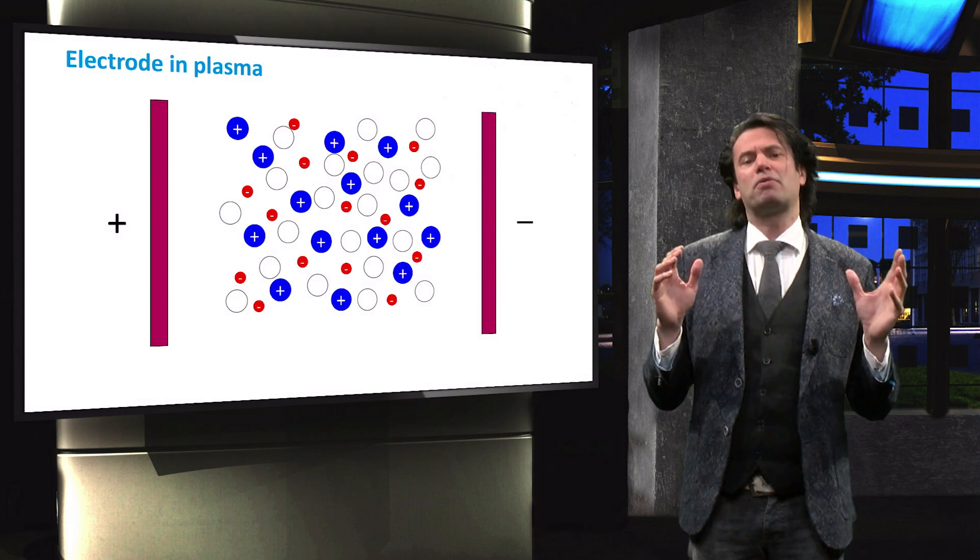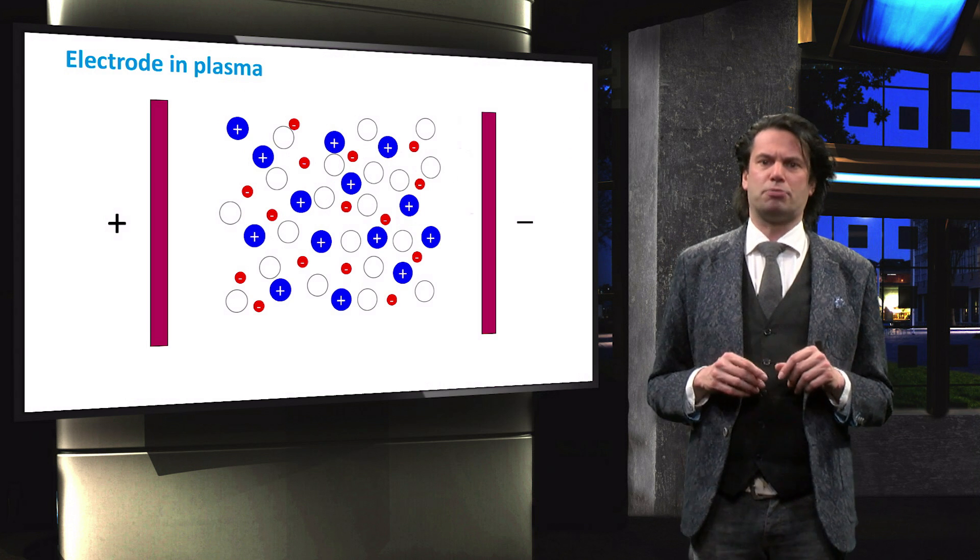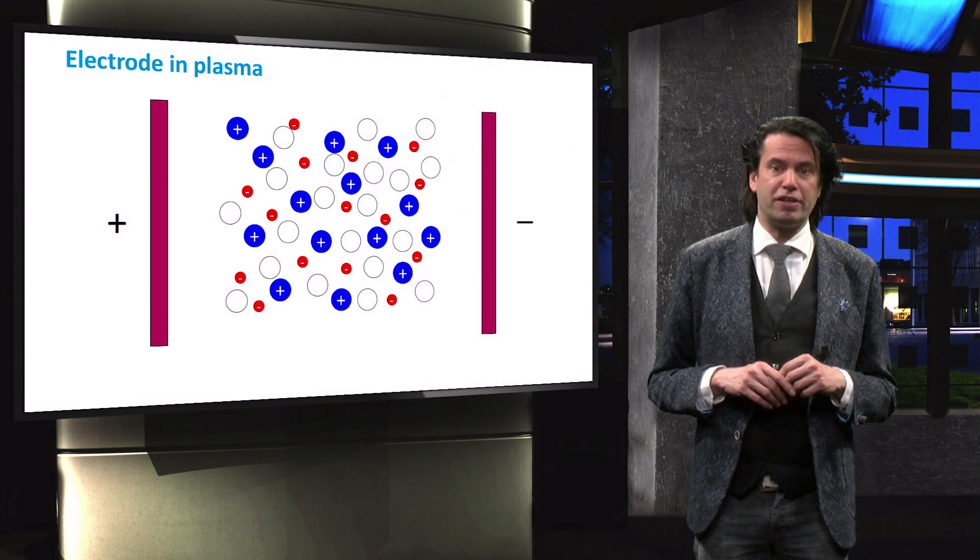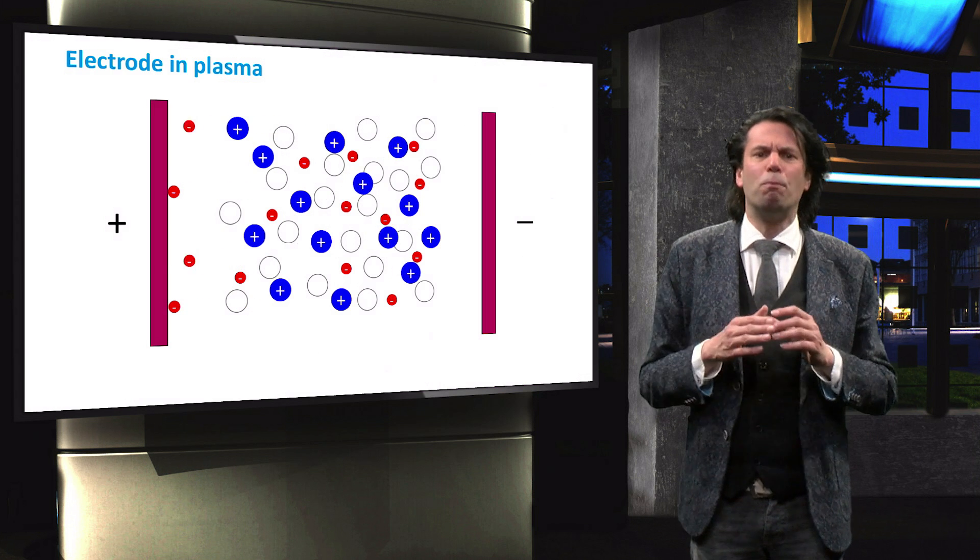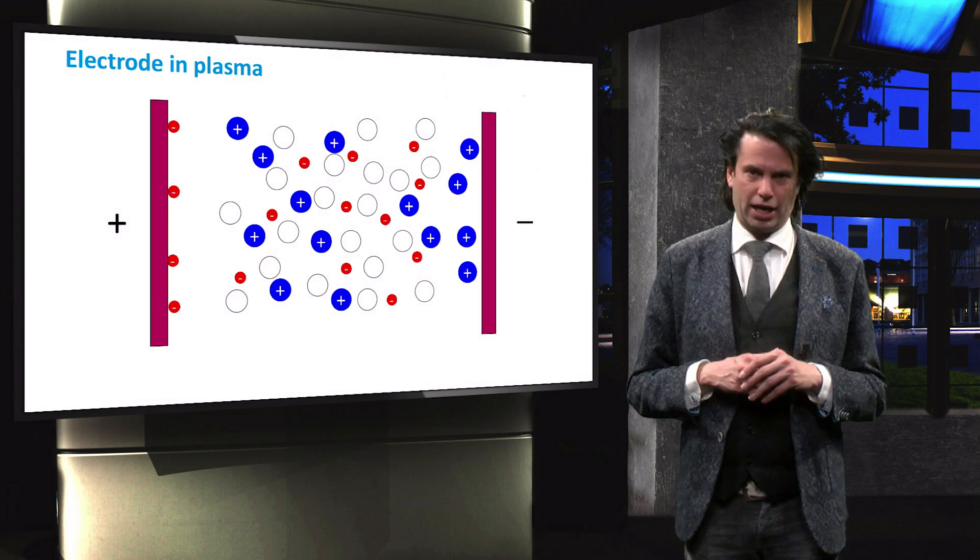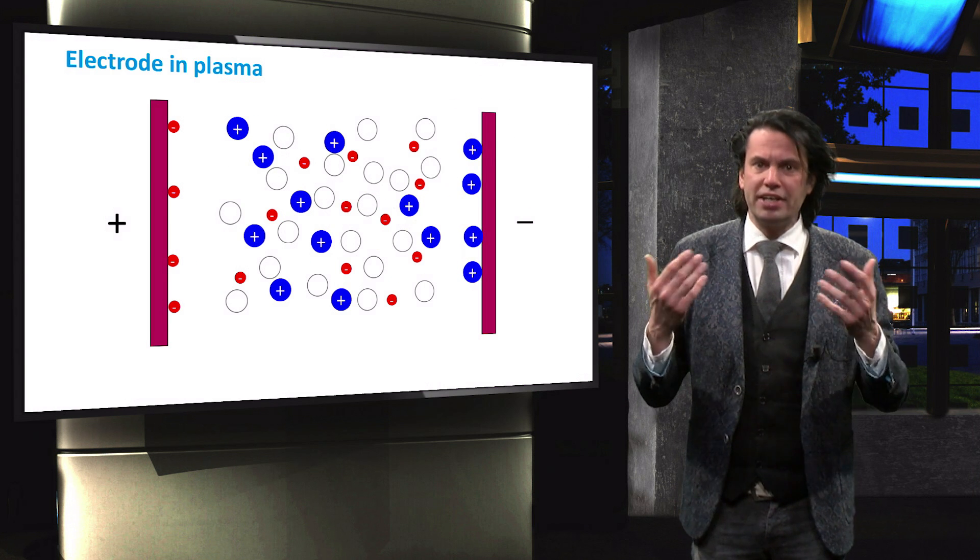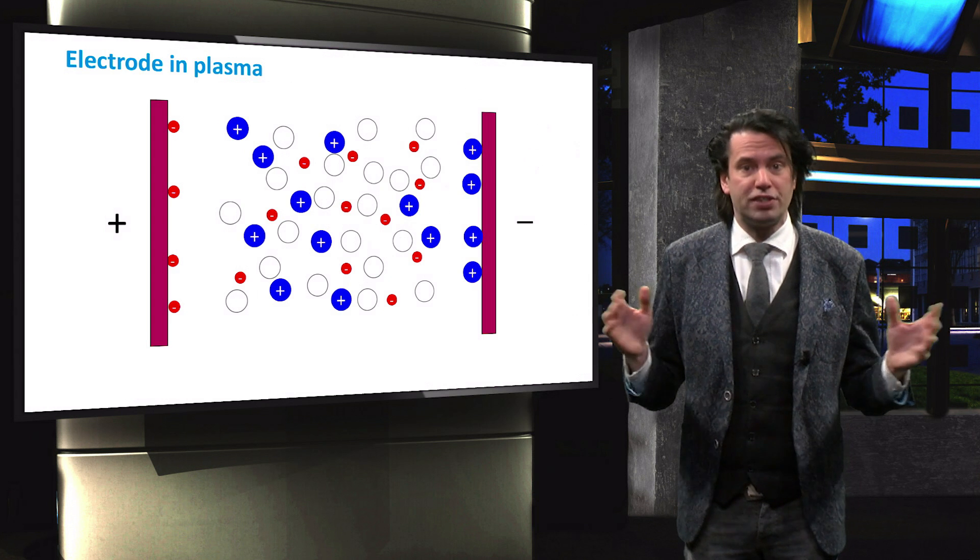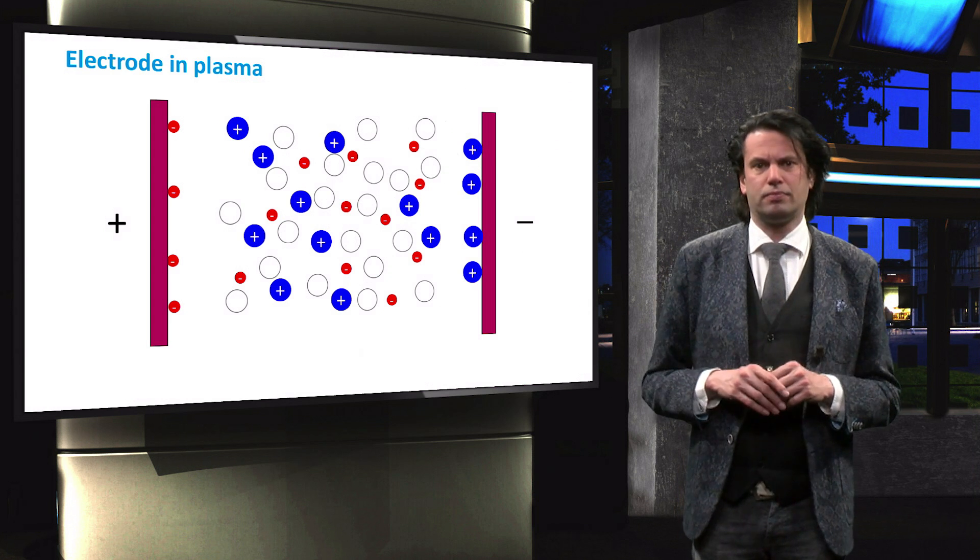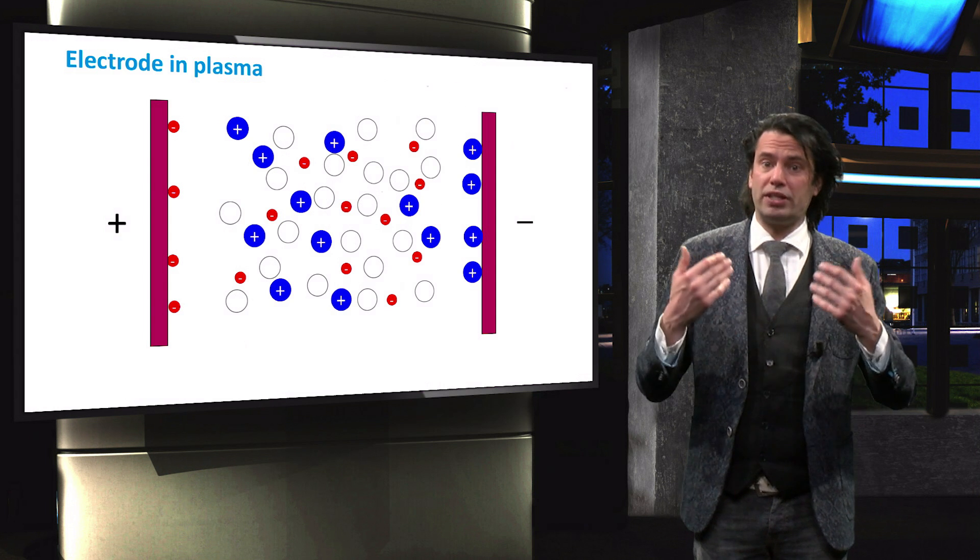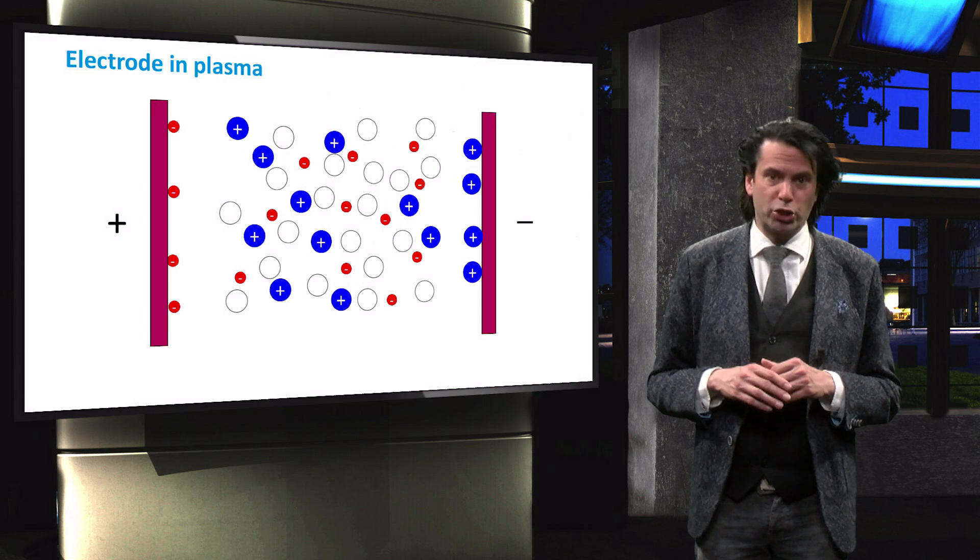In the plasma-enhanced chemical vapor deposition setup, electrodes are used to ignite the plasma, such as these positively and negatively charged electrodes. A flow of electrons will move towards the positive electrode. When the flow is large enough, the accumulated negative charge will screen off the electric field from the electrode, and the flow will stop. The same will occur with the ions at the negative electrode, albeit much more slowly.